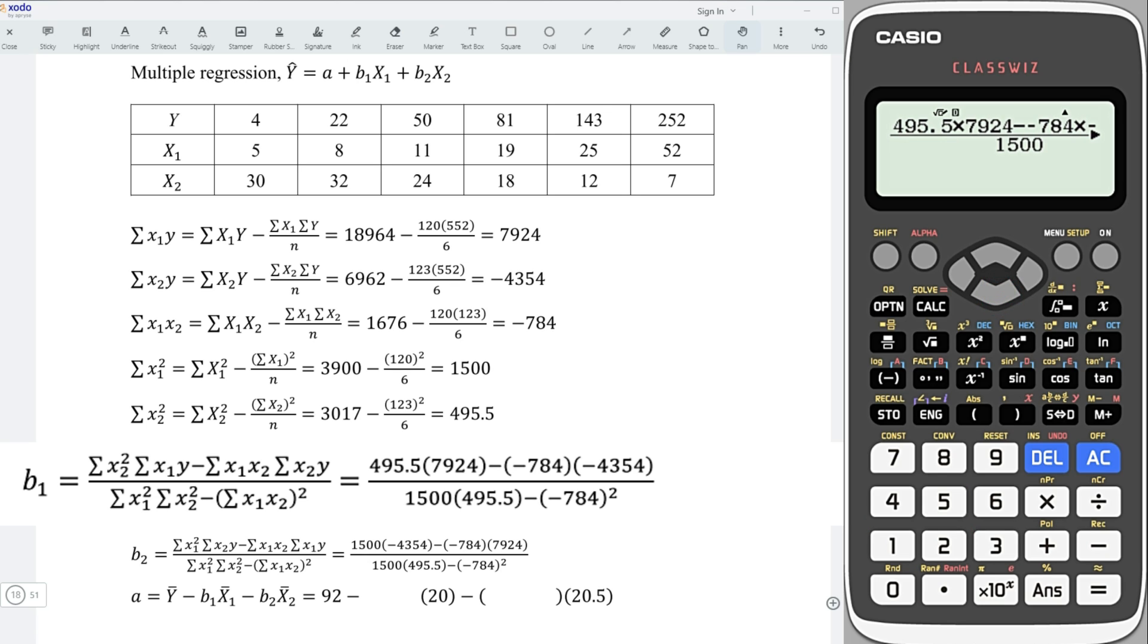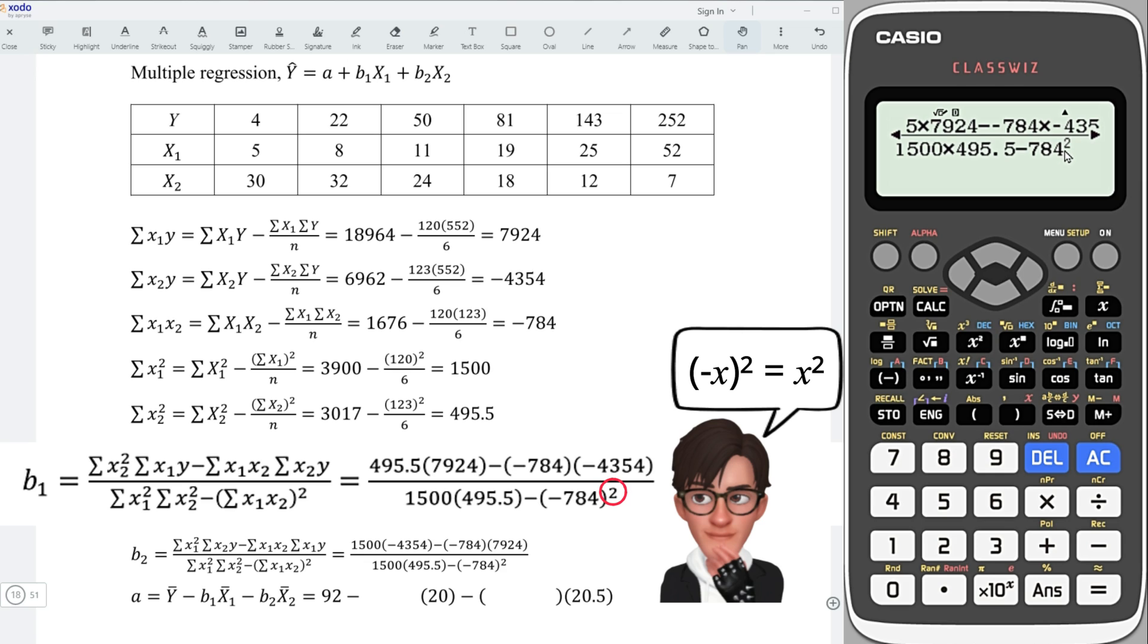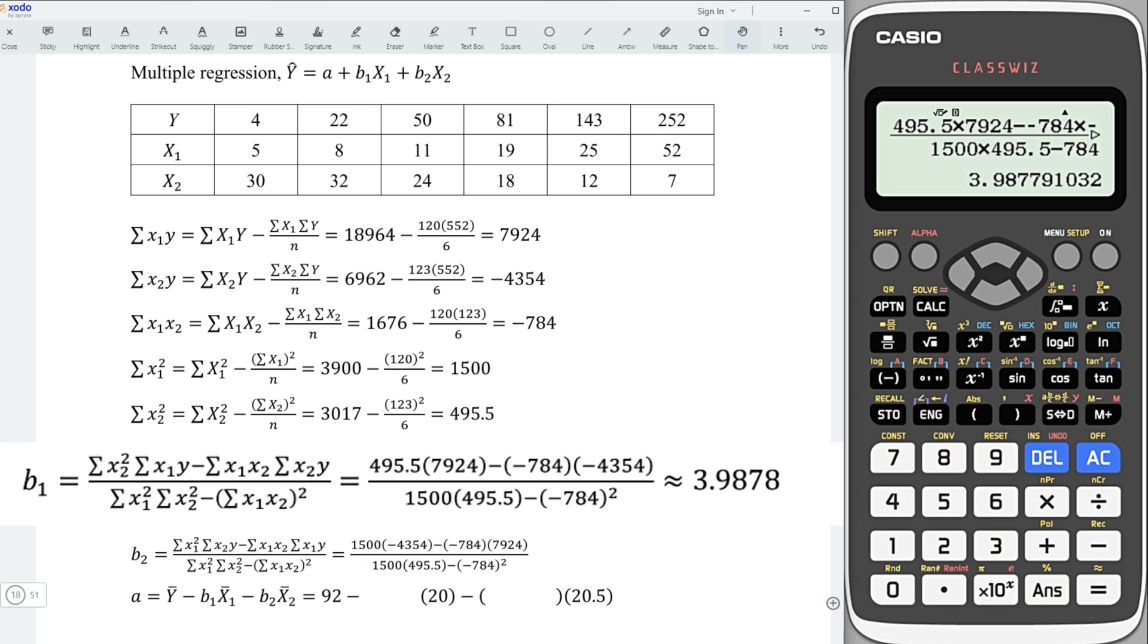1,500, multiply, 495.5, minus, 784 square. Since this is a square, which means that positive or negative is not important. Press on equal, and we should obtain the coefficient of the first factor.